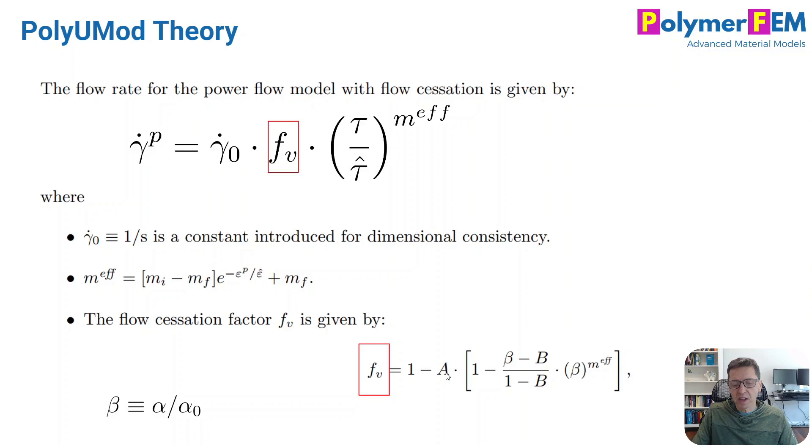So what I'm saying is that if a is equal to zero, the two parameters a and b, if a is zero, this whole flow cessation goes away. This becomes one and it doesn't matter. And if a is one, we get exactly the model idea from Dupaix and Boyce. So we can scale the magnitude of this reduction in flow or relaxation. So that's kind of cool. And the b parameter is just the material parameters that is between zero and one. Beta is a quantity that is related to the molecular orientation. You can show at really small deformations that the factor Fv becomes pretty much one and at large this becomes very small, just like what we want. We want to reduce the viscoplastic flow rate and the relaxation at the large strains.